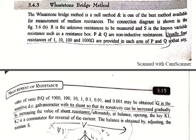Good morning students. In the previous lecture we studied the substitution method. Now coming to the third method, that is the Wheatstone bridge method, as part of the measurement of medium resistances. This is basically a null detector method or null point method, where we have to obtain a null or zero in a galvanometer containing four arms of resistance.